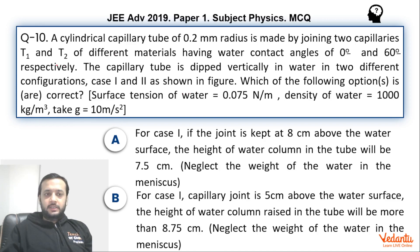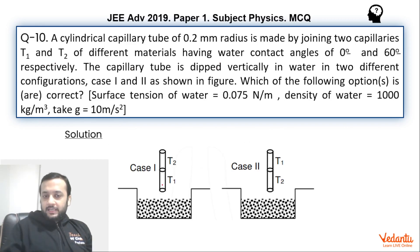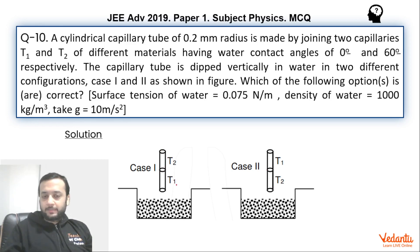Let us see what is being asked in this question. There are two capillary tubes made of different material, T1 and T2. T1 has a contact angle of 0° and T2 has a contact angle of 60 degrees. We are creating two different capillaries by joining both of them. In the first capillary, T1 is below and T2 is at the top. In the second capillary, T2 is at the bottom and T1 is at the top.